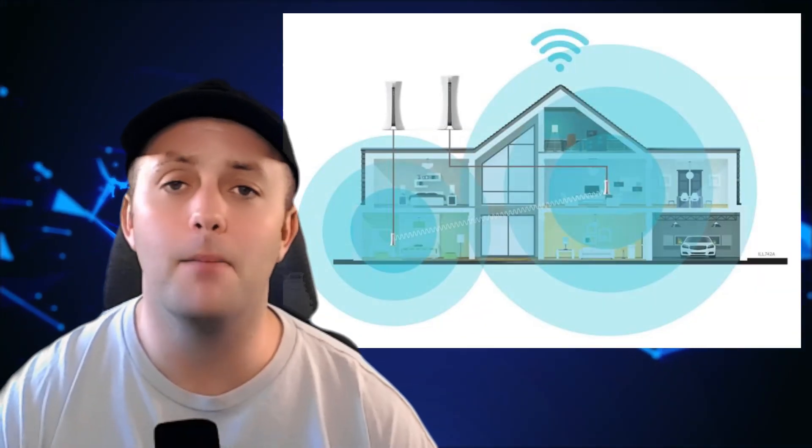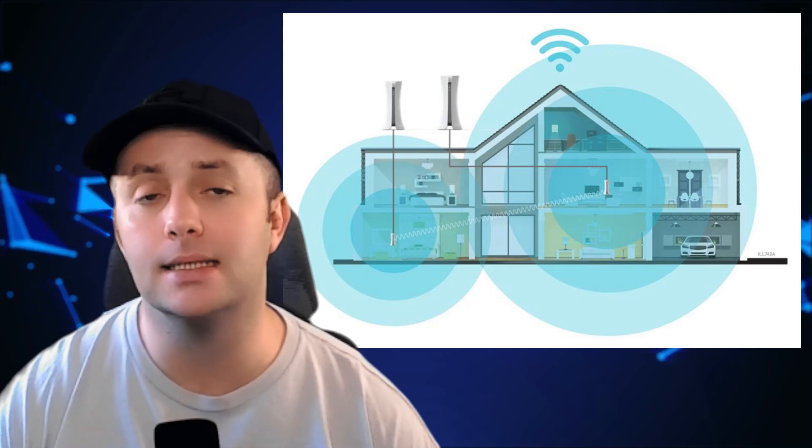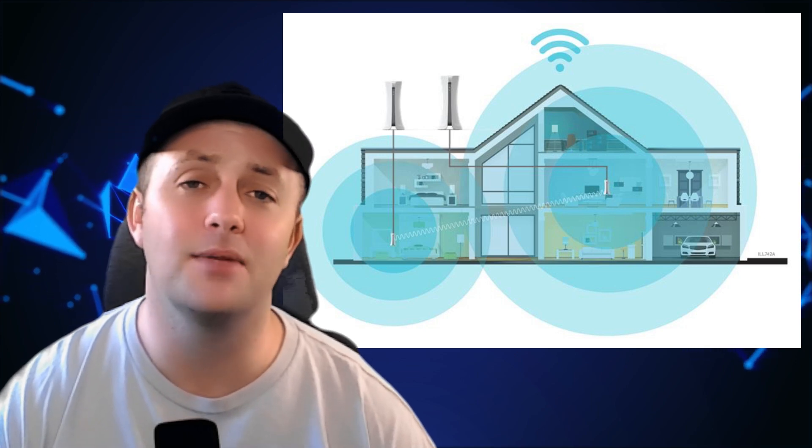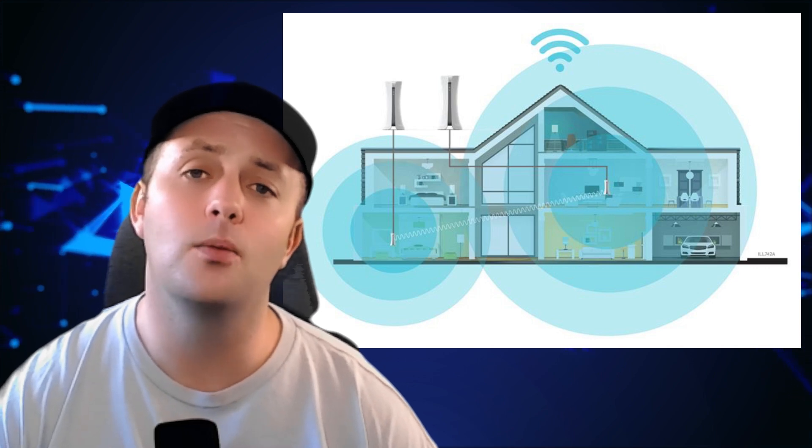Now let's talk about signal strength and interference. One of the biggest challenges with wireless networking is maintaining a strong, reliable signal. A weak signal can lead to slow speeds, dropped connections, and poor performance, especially when streaming video or gaming online. To optimize your Wi-Fi network, start by positioning your router in a central location, preferably away from thick walls, metal objects, and other electronic devices that can cause interference. The height of your router also matters — placing it higher up, like on a shelf, can improve coverage as well. Consider upgrading your router's antenna or using Wi-Fi extenders or mesh Wi-Fi systems to improve coverage in large spaces.